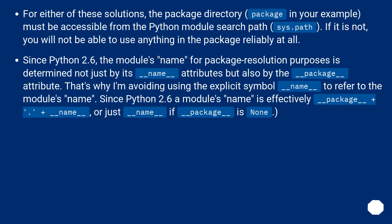For either solution, the package directory must be accessible from the Python module search path (sys.path). If it is not, you will not be able to use anything in the package reliably. Since Python 2.6, the module's name for package resolution purposes is determined not just by its __name__ attribute but also by the __package__ attribute. A module's effective name is __package__ + '.' + __name__, or just __name__ if __package__ is None.